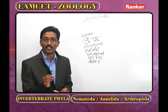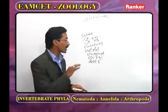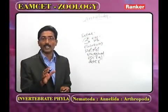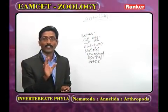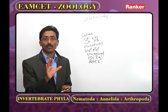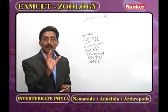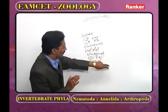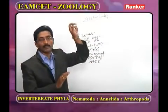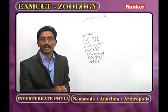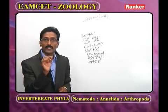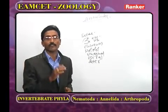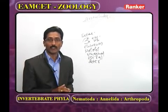In all annelids, a nerve ring is present around the pharynx. The nerve cord is a double ventral solid nerve cord, with ganglia arranged segmentally. This is characteristic of the phylum Annelida.